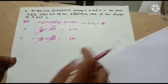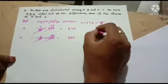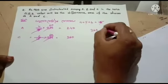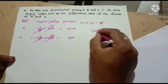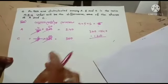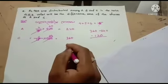To find the difference, we calculate based on the ratio. Working through the shares, we can determine the difference between the amounts. The answer is option B.